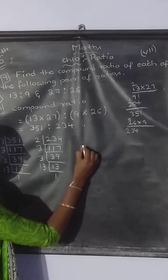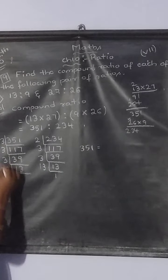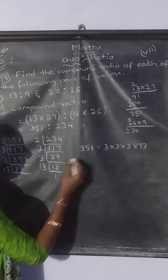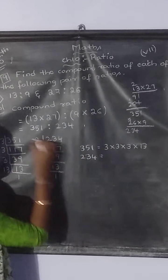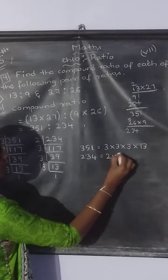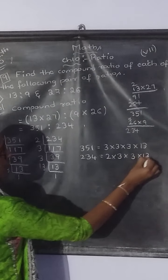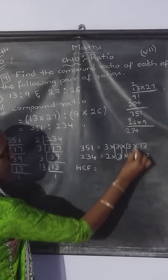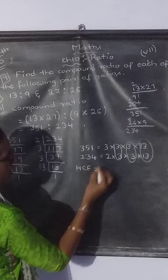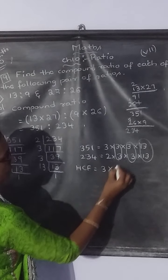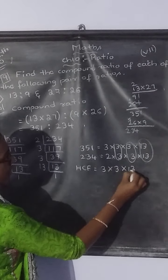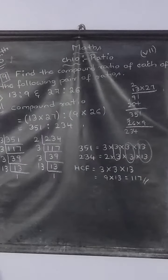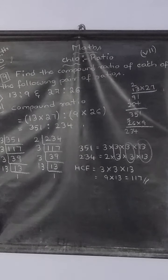So we can write 351 as 3 into 3 into 3 into 13. And 234 can be written as 2 into 3 into 3 into 13. So what is your HCF children? See, 3, 3 is common. This 3, 3 is common. 13, 13 is common. So instead of 2 threes write 1 three. Instead of 2 thirteens write 1 thirteen. 3 times 3 is 9 into 13. What is 13 times 9? It is 117. So your HCF is 117.